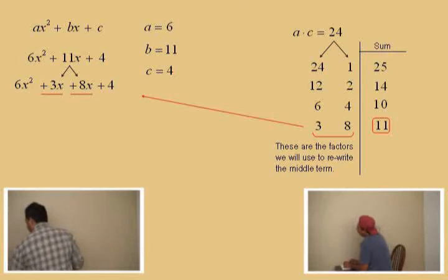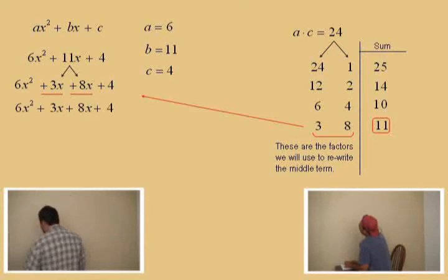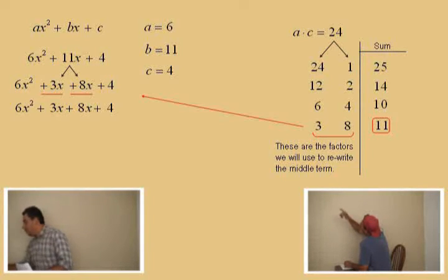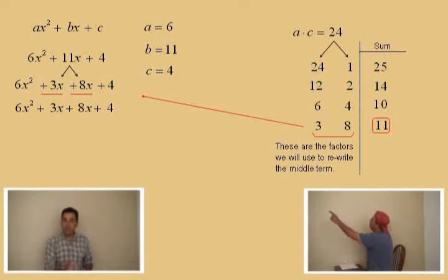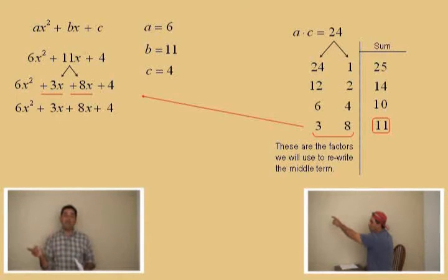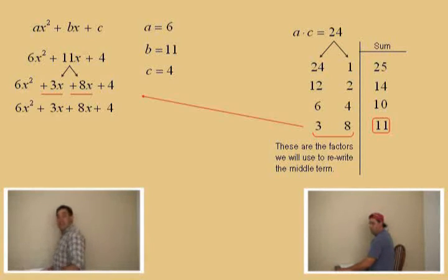Now, let's rewrite our problem here. 6x squared plus 3x plus 8x plus 4. And now, what we're going to do is we have 4 terms now. So, we go back to the previous lecture which was factoring by grouping. Charlie's favorite subject here. So, we form our two groups there.